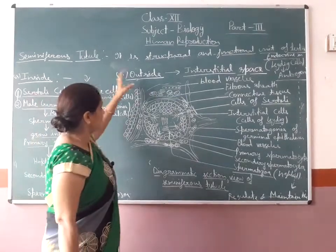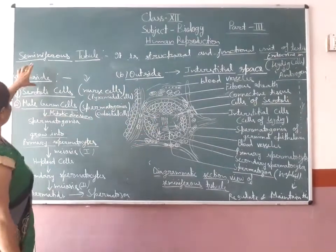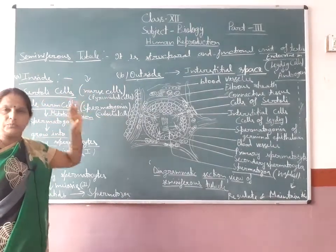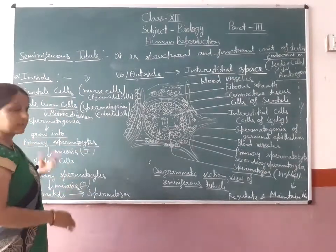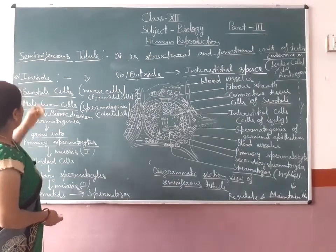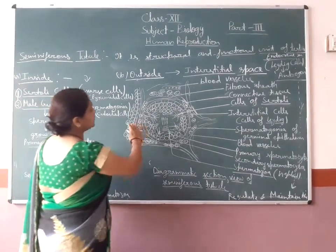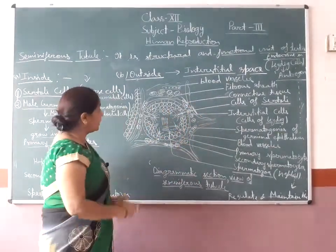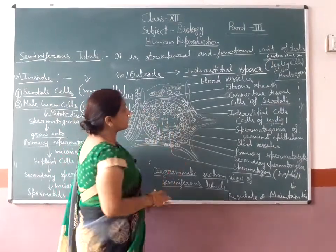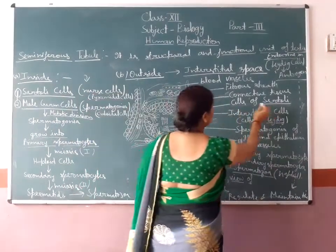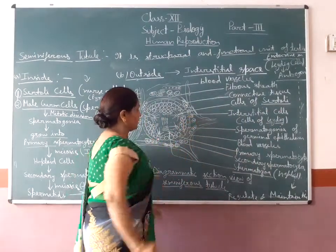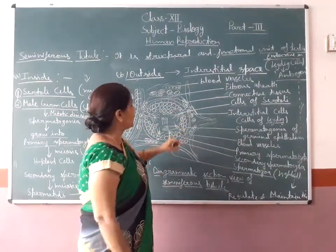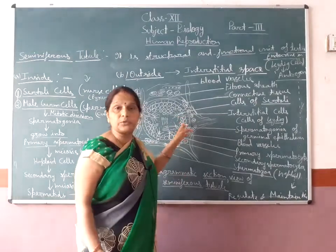Again, looking at this figure — seminiferous tubules are the unit of the testes, meaning the testes is made up of seminiferous tubules. The seminiferous tubule has two sides: the inside and the outside. Inside, it consists of two specialized cells: the Sertoli cells and the germinal layer. Sertoli cells are pyramidal in shape and they give nourishment to the developing spermatozoa.